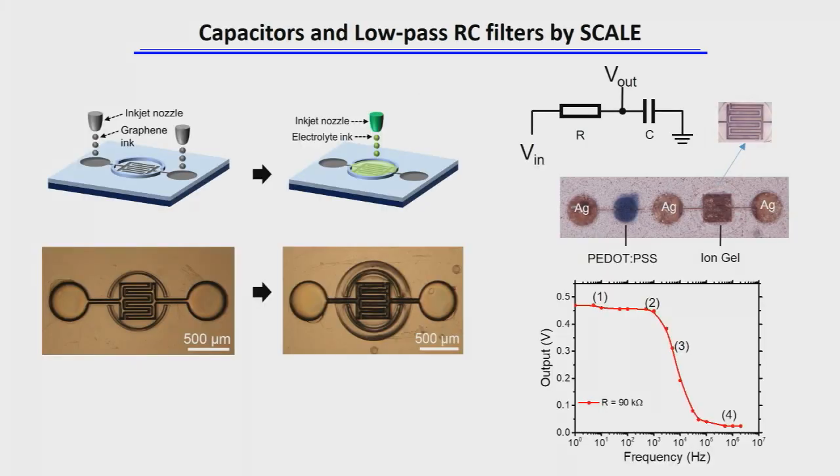We can make capacitors in a similar way. Here we're using a graphene ink, and we use a gel electrolyte. So we have what's called an electrolytic capacitor, and those of you who maybe have a little electrical engineering background, you'll recognize that we can make an RC circuit, and this is entirely printed, and this is a low-pass filter. So this shows the output voltage of this device versus frequency, and this cutoff point here we tune just by picking what R and C we make.